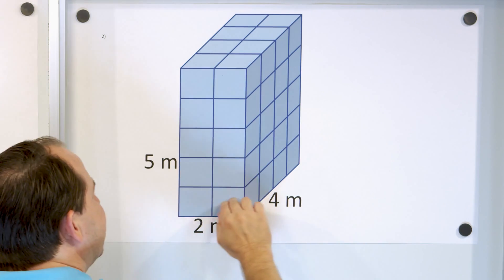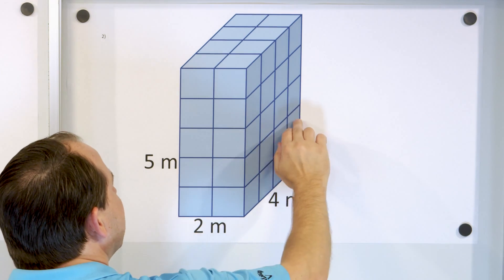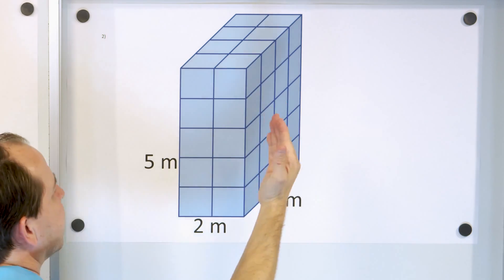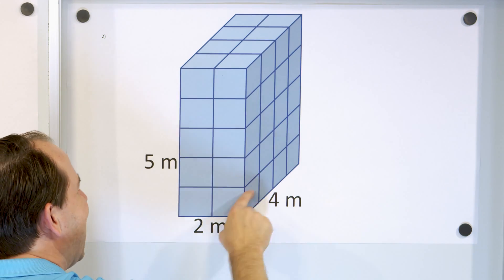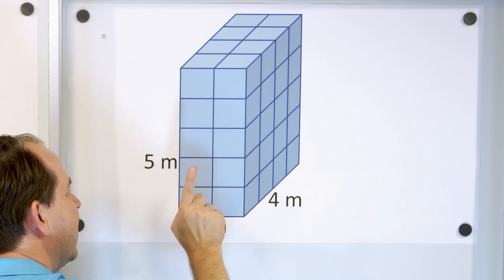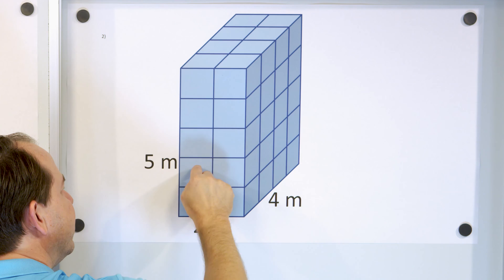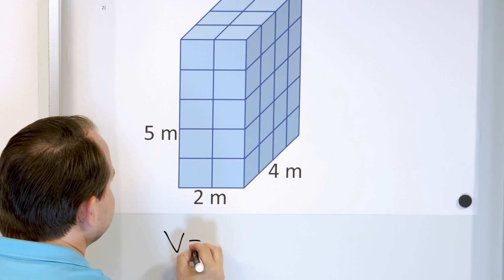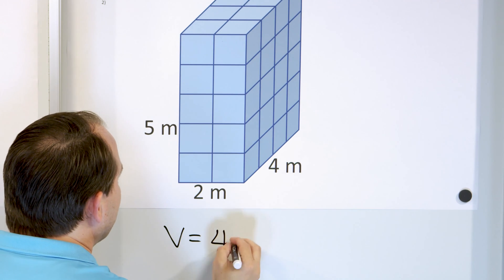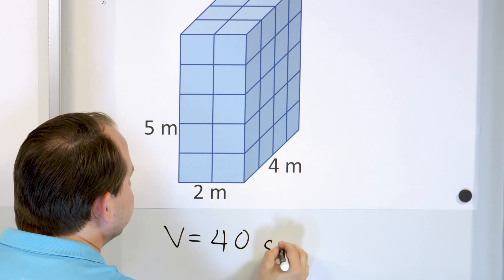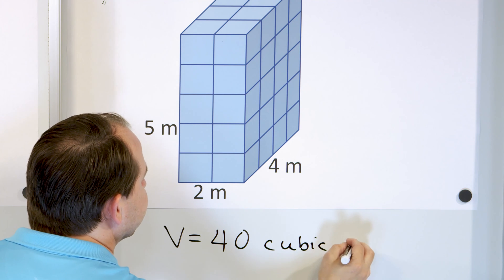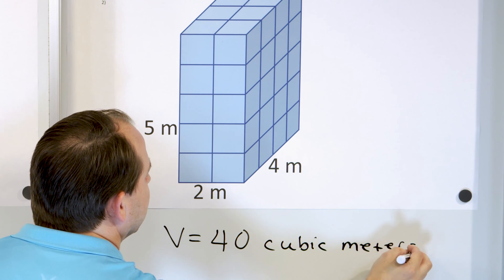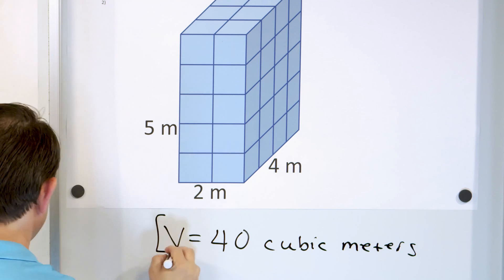So if there's eight cubes in the bottom layer, and then eight, and eight, and eight, and eight — how many altogether? It's eight times five layers, and eight times five is 40. So the volume is 40 cubic meters.